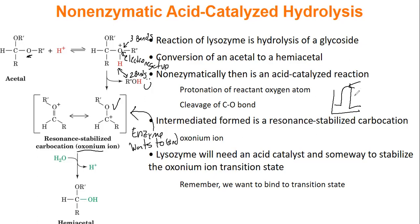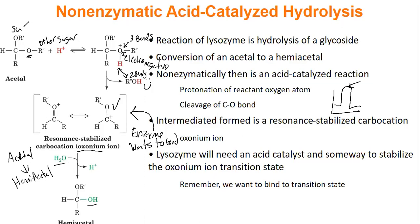To finish off this reaction, water will come in, lose a proton, and become an OH group. This whole mechanism is an acetal to a hemiacetal reaction — we've seen this type of reaction when we've looked at sugar cyclization. To break a glycosidic bond, we're doing the same thing where this R group here would be our other sugar. So you can say this is sugar one, and the R group is sugar two — that's what we're really cutting.